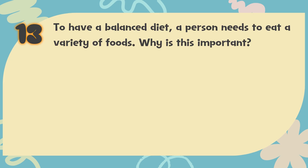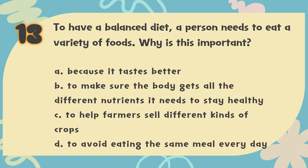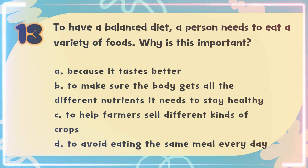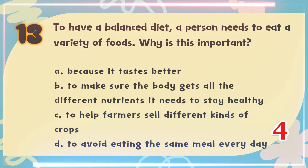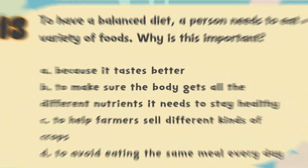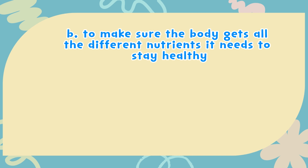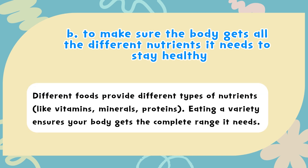Number 13. To have a balanced diet, a person needs to eat a variety of foods. Why is this important? The choices are: A. Because it tastes better; B. To make sure the body gets all the different nutrients it needs to stay healthy; C. To help farmers sell different kinds of crops; D. To avoid eating the same meal every day. The correct answer is B. To make sure the body gets all the different nutrients it needs to stay healthy. Different foods provide different types of nutrients like vitamins, minerals, and proteins. Eating a variety ensures your body gets the complete range it needs.